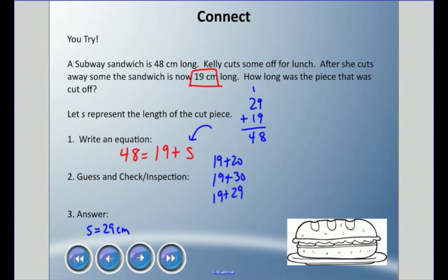If we do the inspection method, we start off with the total and we're going to subtract what was left. That should equal what was cut off. So 48 minus 19, got to do some borrowing here. 18 minus 9 is 9, 3 minus 1 is 2. And again we get that 29 centimeters.